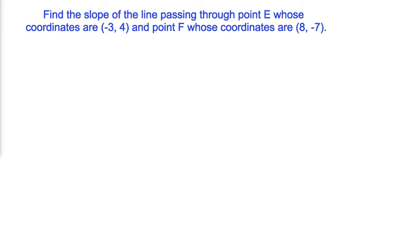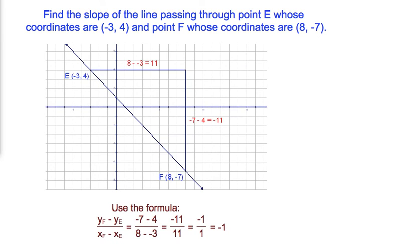Problem number 3: Find the slope of a line passing through point E, whose coordinates are (3, 4), and point F, whose coordinates are (8, 7). Solution: We will use the slope formula. The difference of the y-coordinates of points F and E is equal to negative 11. After reducing negative 11 over 11 to the lowest terms, the slope of a line passing through points E and F is negative 1 over 1, or negative 1.